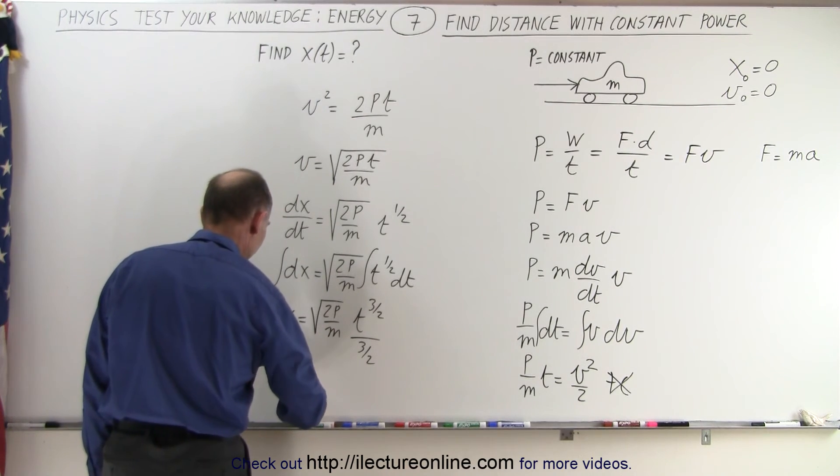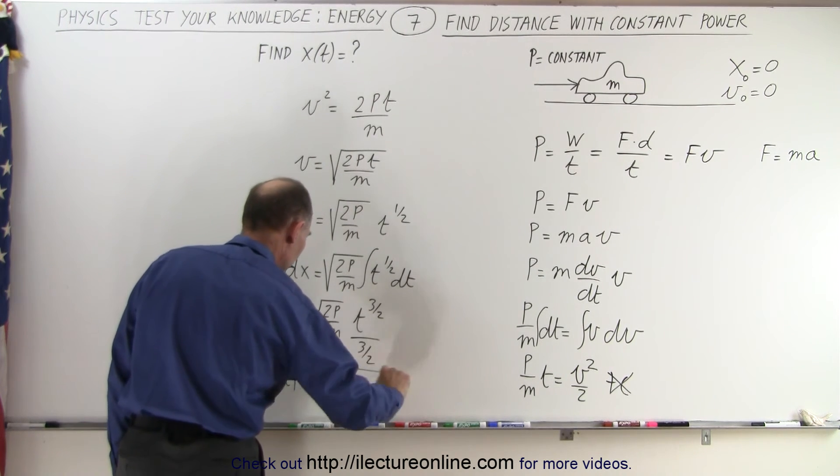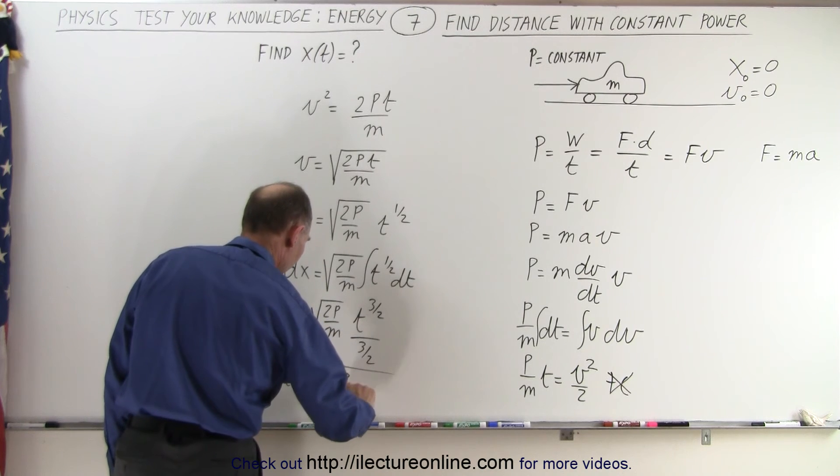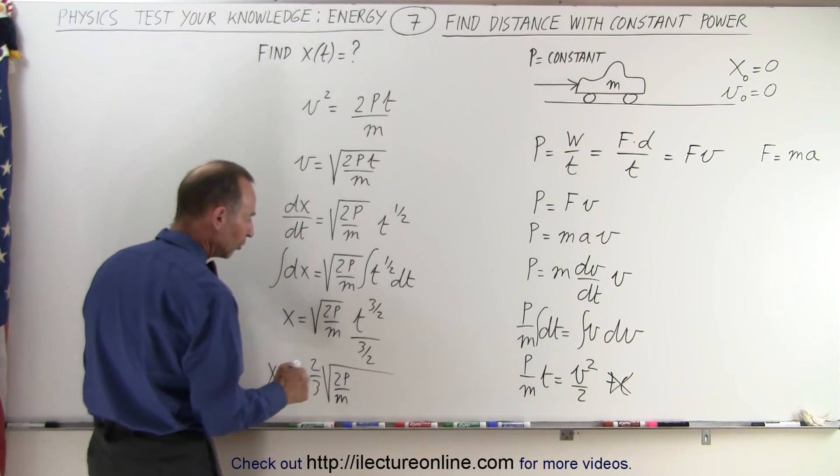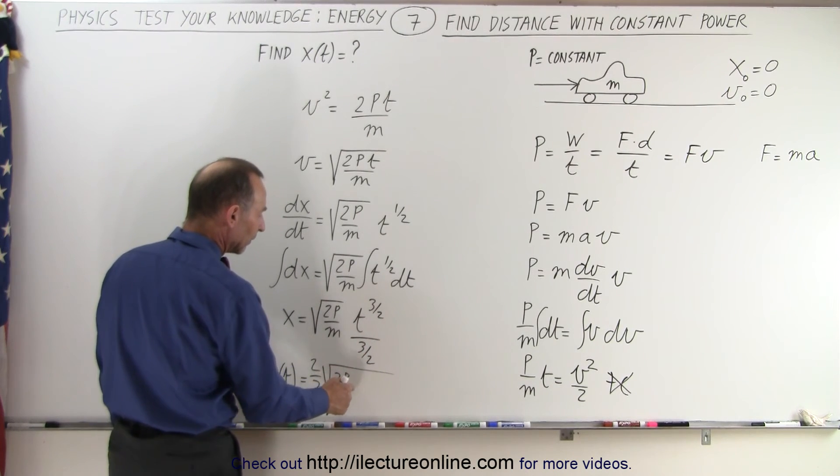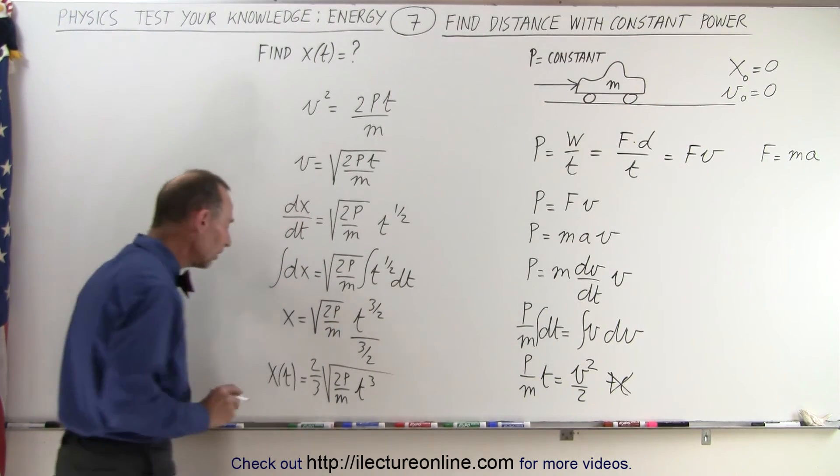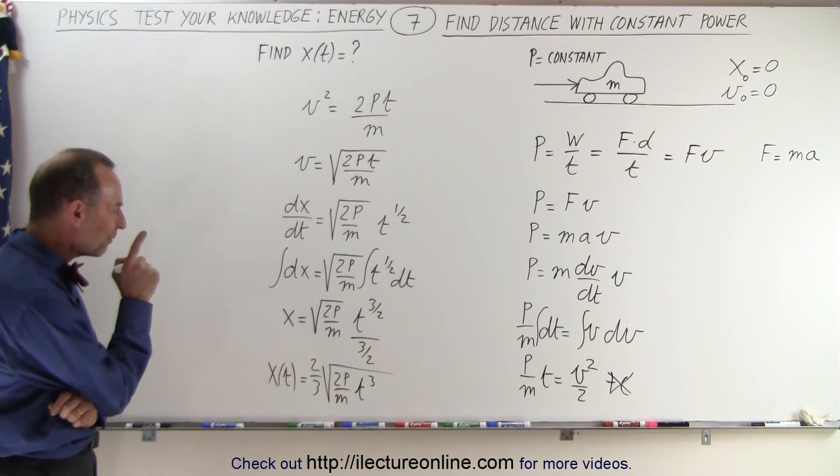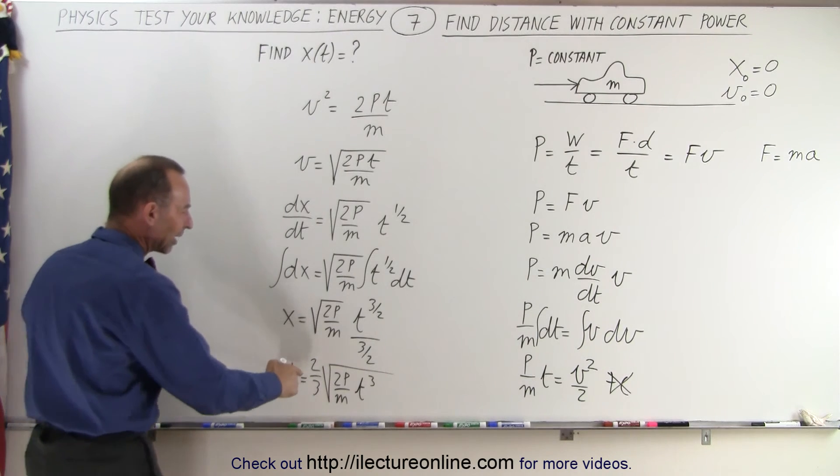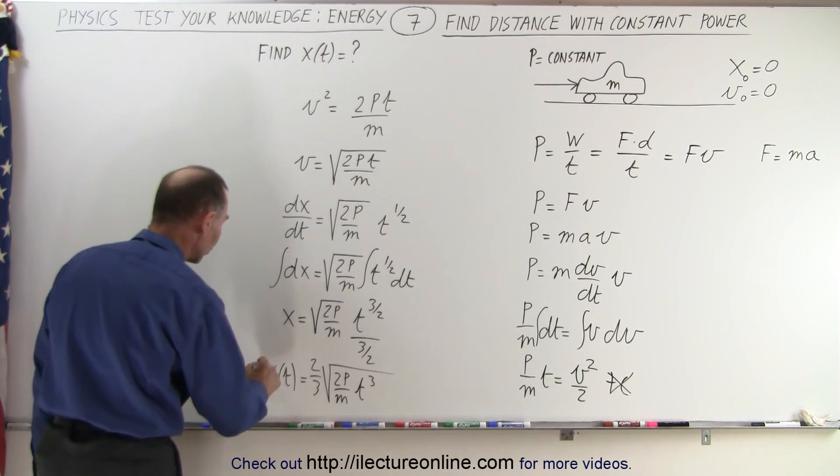And that means that we can say that x as a function of time is equal to two-thirds times the square root of 2P/m. But now notice we have t to the three-halves power. So the one-half power, we can bring it inside the radical. And then we have t³ inside like this. And then we have the 2 and the 3. We can bring that inside as well. So when the 2 comes in, that's 4. 4 times 2 is 8. And 3, when it goes in, that becomes 9.